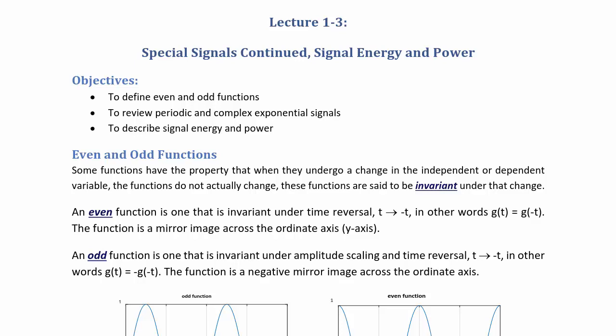Some functions have the property that when they undergo a change in the independent or dependent variable, the functions do not actually change. These functions are said to be invariant under that change. You studied linear time-invariant signals in your EC205 Circuits and Systems course. An even function is one that is invariant under time reversal, from t to negative t. In other words, g(t) equals g(-t). This function is a mirror image across the ordinate axis or the y-axis.